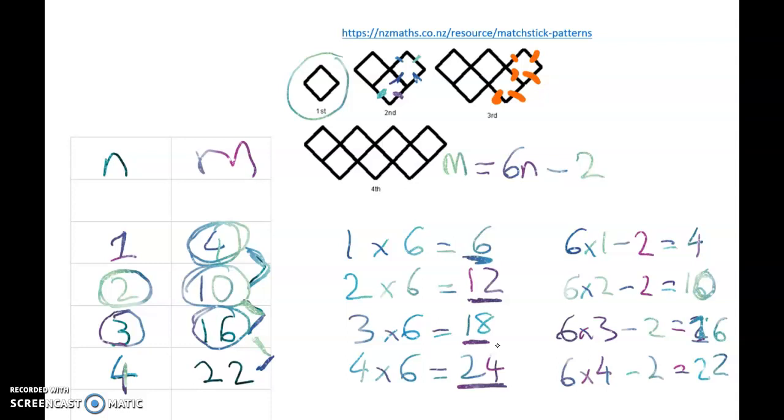And what we look for is we look for that constant difference, and then we times it by the pattern number. And we see what adjustment we have to make. But there's a really easy way to see that. And you'll notice, some of you will notice, if I taught you last year, that if we leave a gap in our table, we can think about it like this.